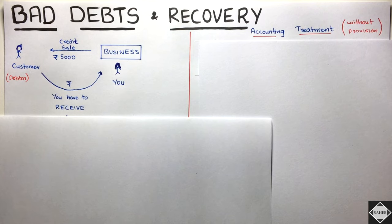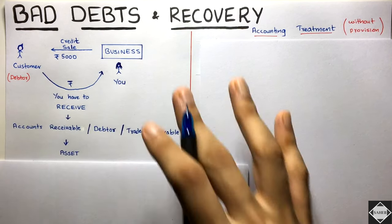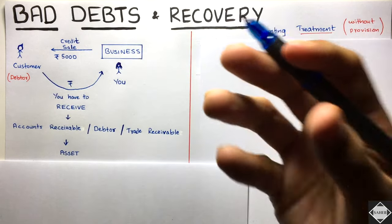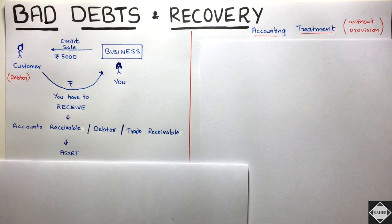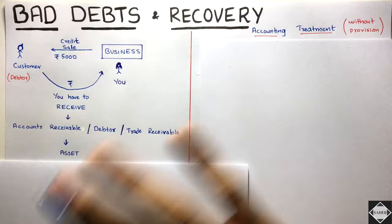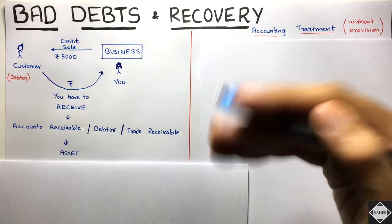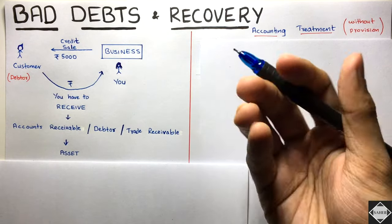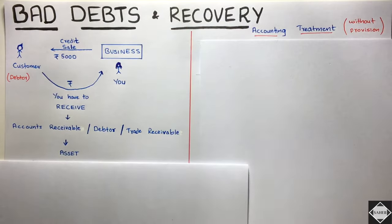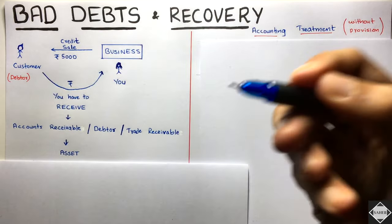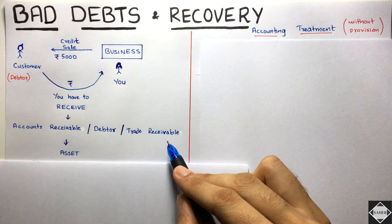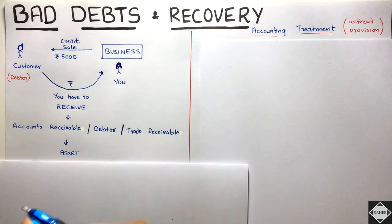Let's start with an example to understand the concept. Let's say you have a business and you have made a credit sale to your customer of 5000 rupees. You have sold some goods and have not received any money — the customer has promised to pay in future. So immediately you have a future economic benefit, and we call this accounts receivable, debtor, or trade receivable.